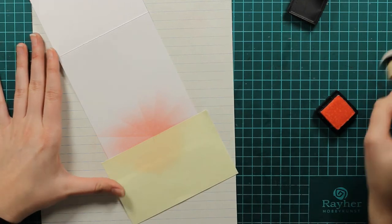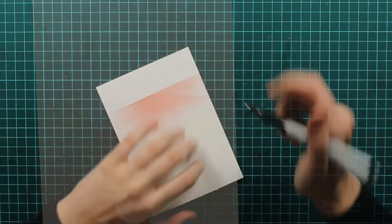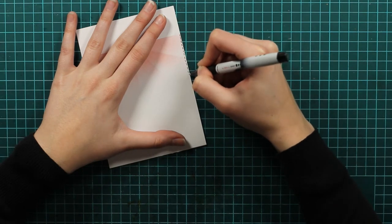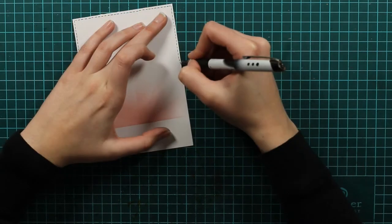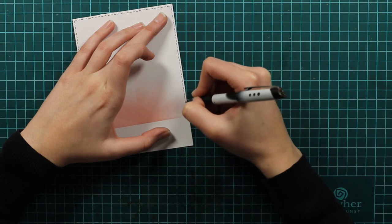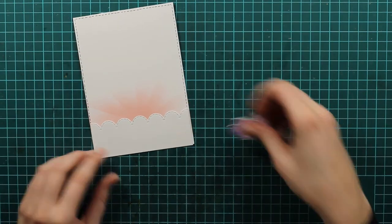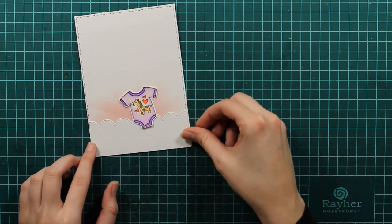I am using here Spun Sugar Distress Ink. In the boyish version I was using Peacock Feathers. So the next step is to do some false stitching. I will use my black pen and I will just go around and this will be the final version of my false stitching.